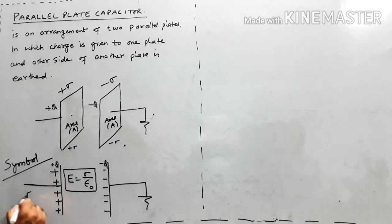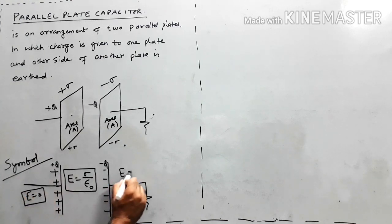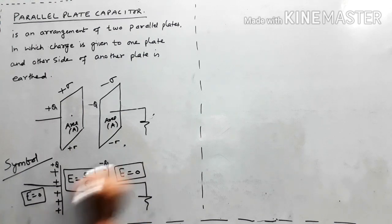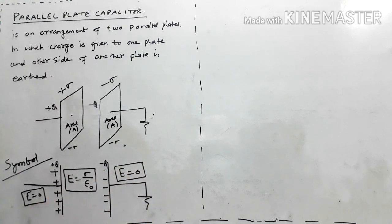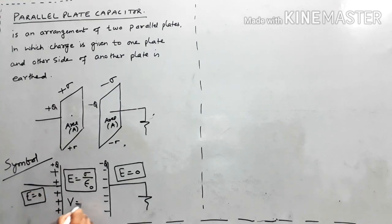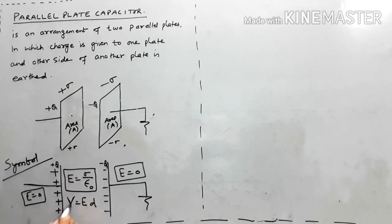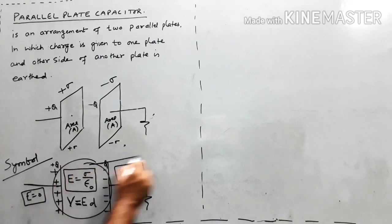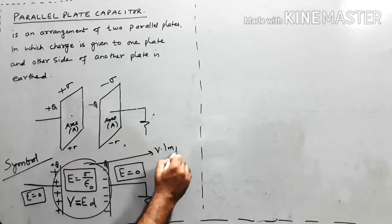Outside the plates, the electric field is zero on both sides. Between the plates, E = σ/ε₀. If we need to find the electric potential V, the formula is V = ED. This concept is very important — please remember it.